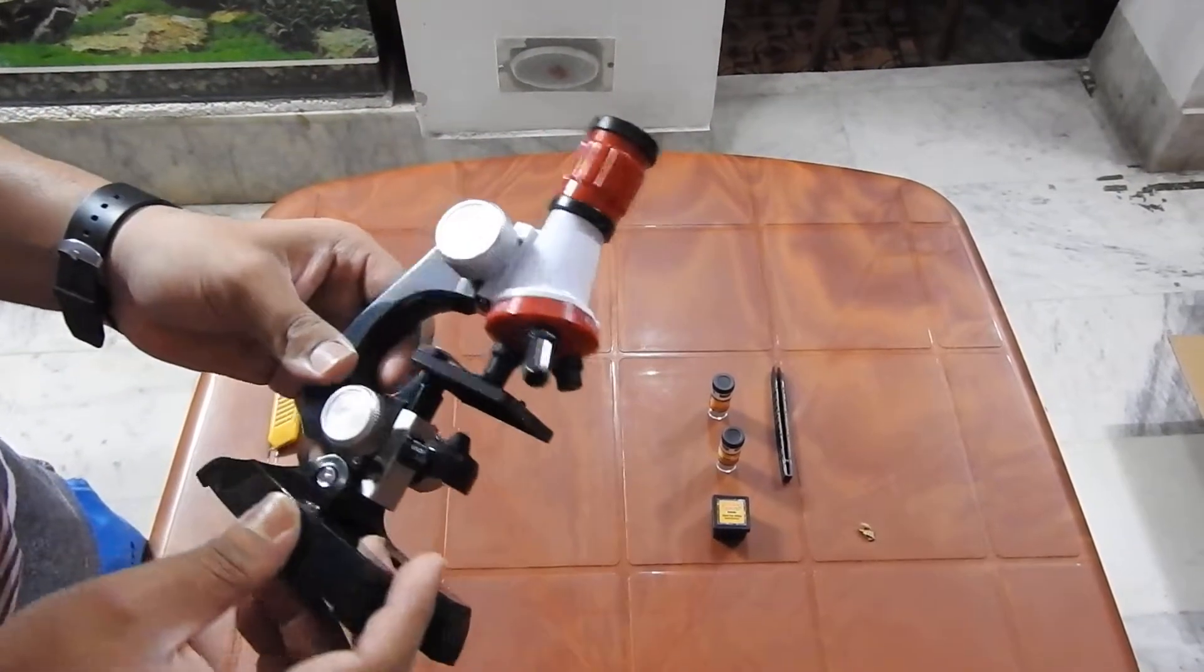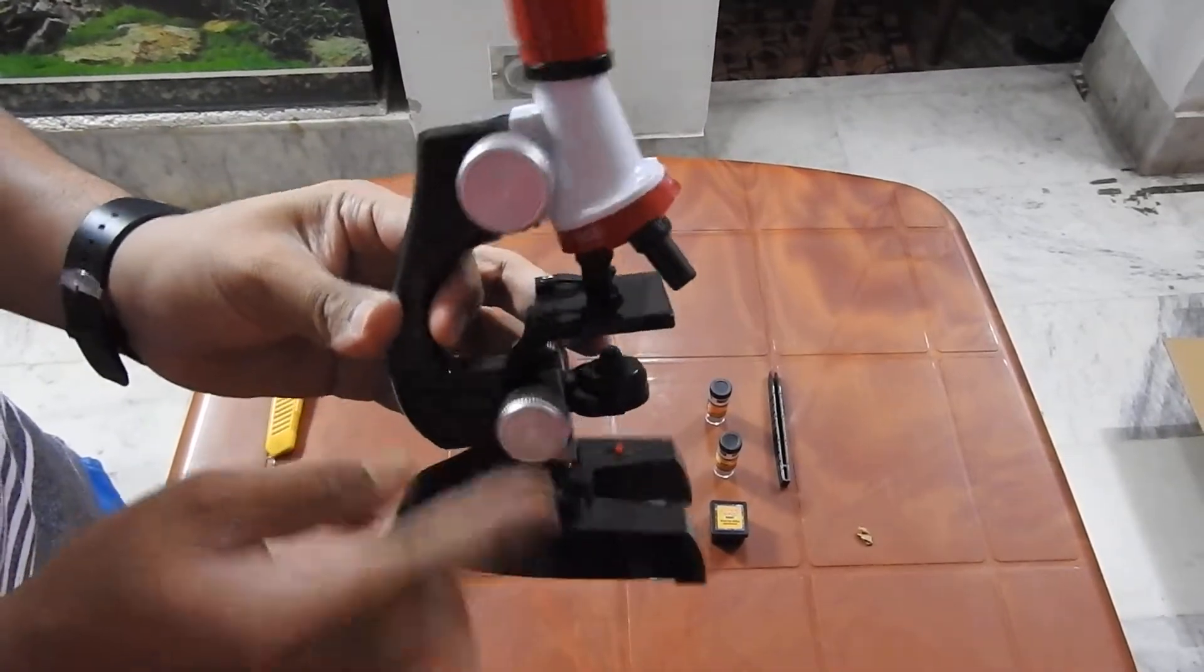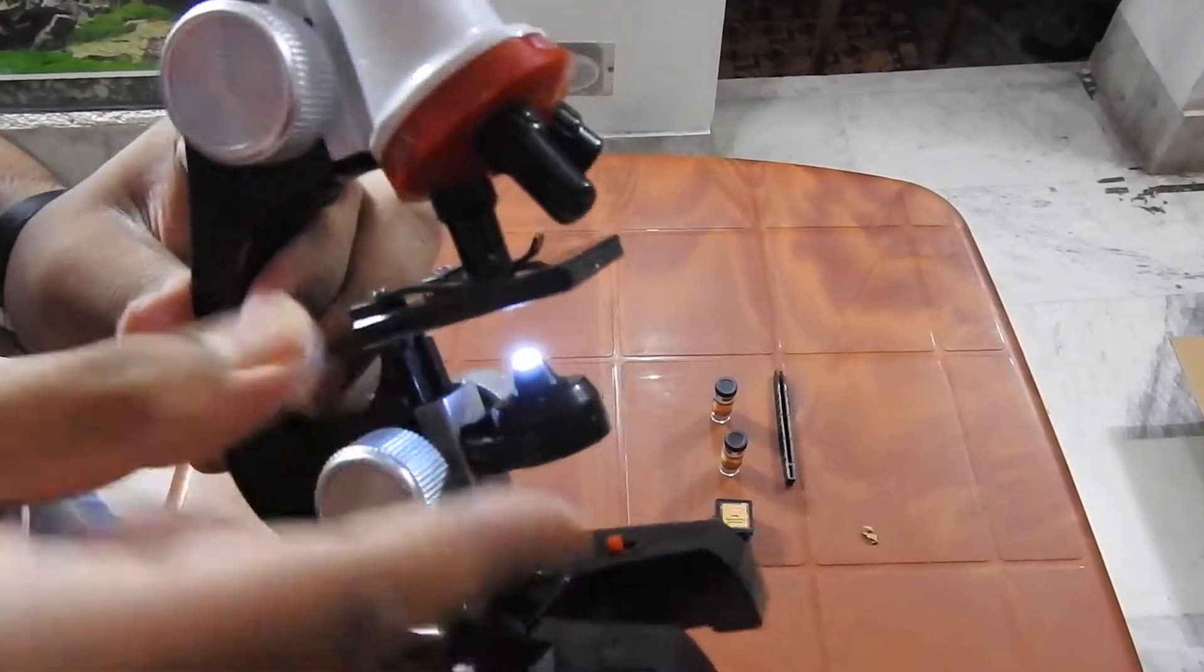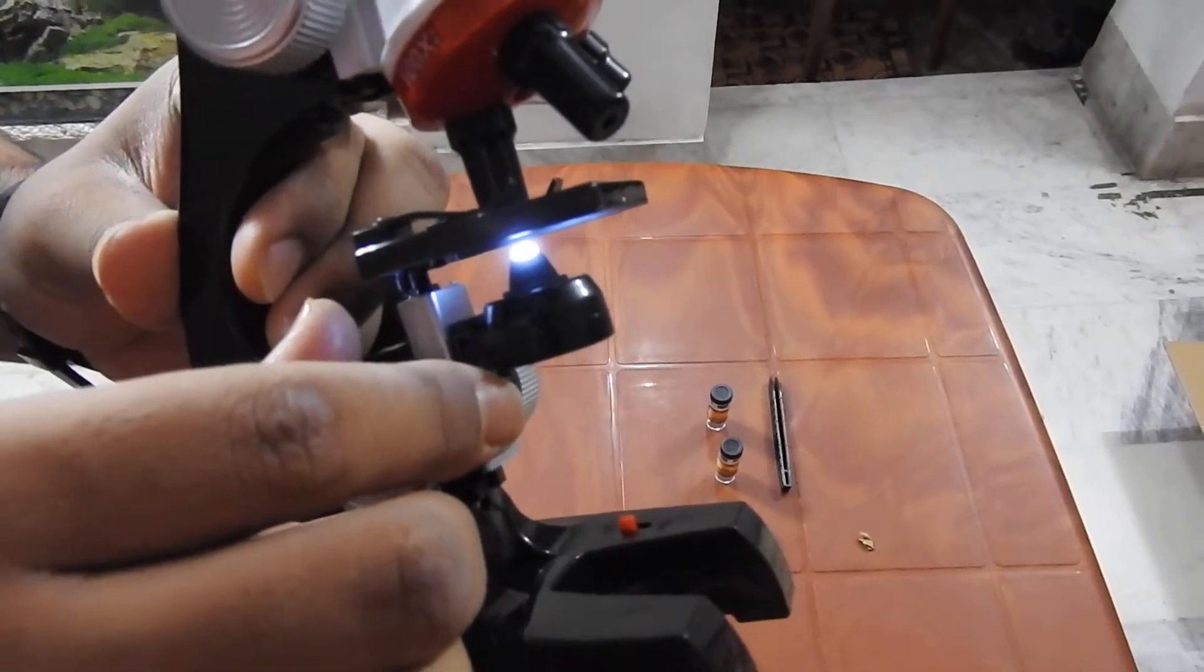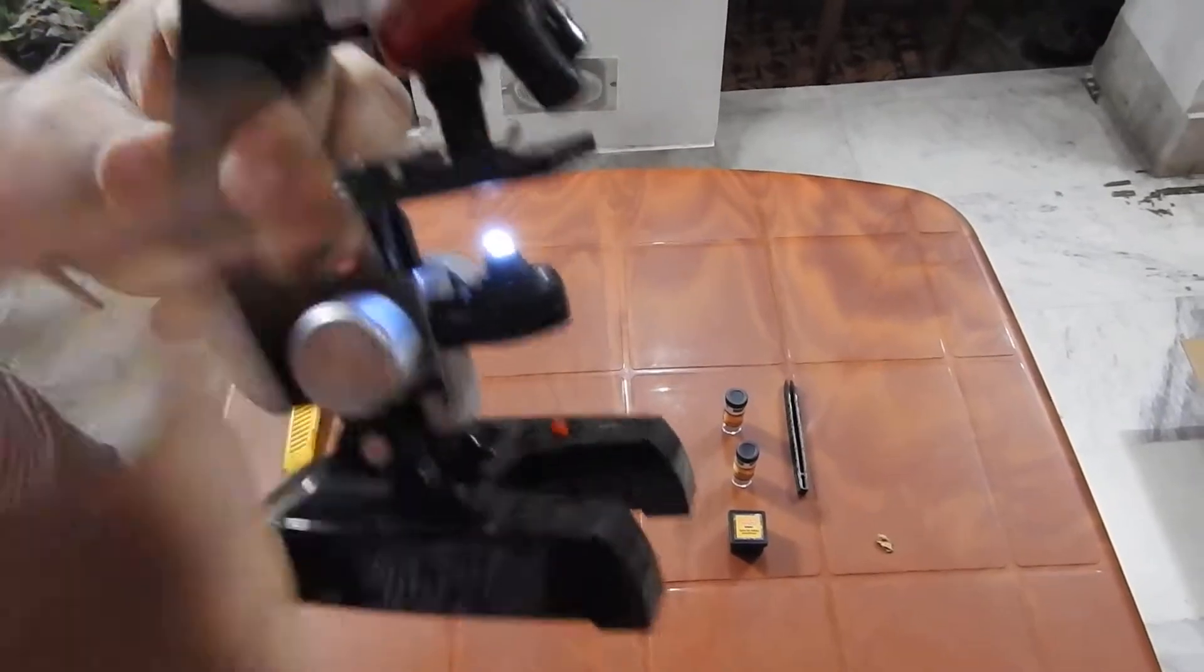Using these coarse adjustment screws you can put the light up and down, I mean upwards and downwards. So as I rotate it in the anti-clockwise direction it goes upward, and as I rotate it in the clockwise direction it goes downwards. So using this you can put the light up and down.